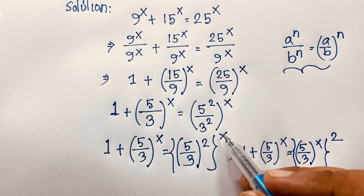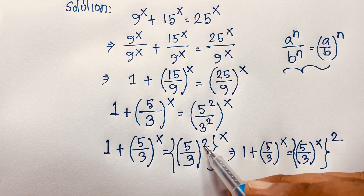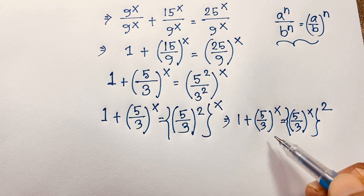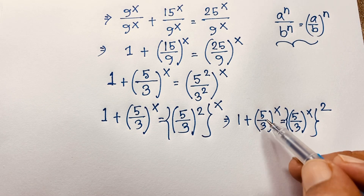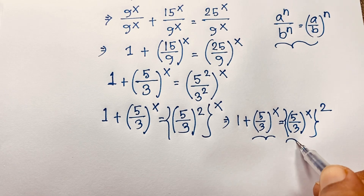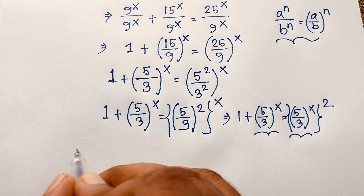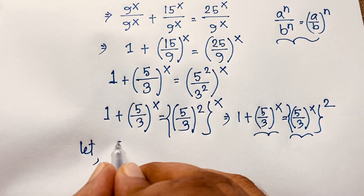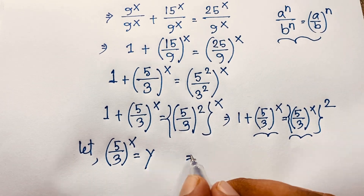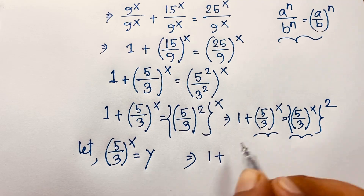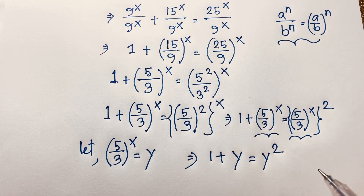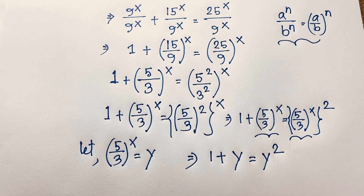I move the exponent 2 inside. Then at this moment, (5/3)^x appears on both sides. So let's set y = (5/3)^x. If I let this equal y, then it will be 1 + y = y². So we are finding a nice quadratic equation.